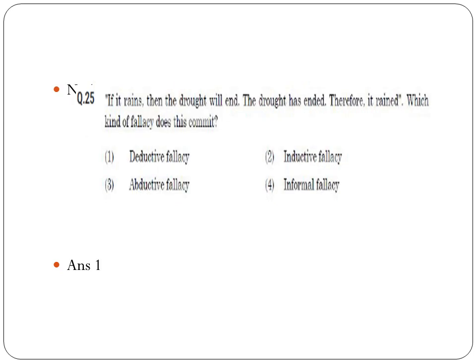Question 25: 'If it rains, then drought will end. The drought has ended, therefore it rained.' Which kind of fallacy is this? Options: deductive fallacy, inductive fallacy, abductive fallacy, and informal fallacy. We will analyze each. Deductive means going from general to particular. Inductive means going from particular to general.